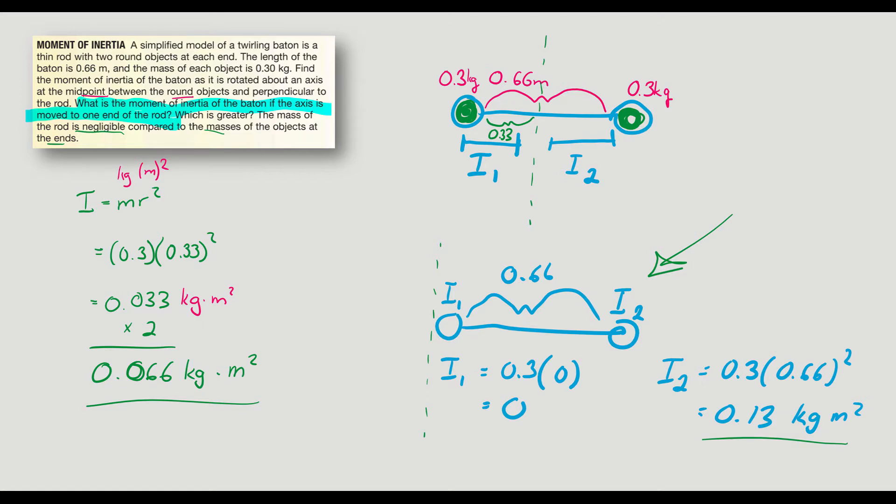You could even try this out on your own. If you grab a book, if you grab one end of it and try in your hand and rotate it, you will notice it takes a little more effort to start that thing twisting than if you were to grab it in the middle of the book right there and try and twist it. It's going to be easier. So now from this example, we need to now talk about Newton's second law of rotational motion.